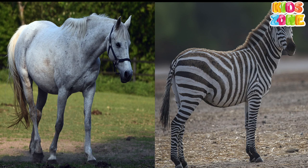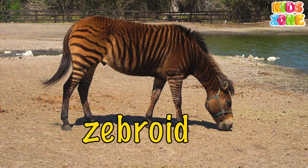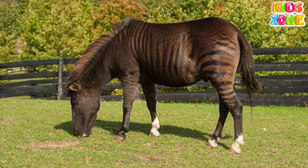Horse plus zebra: Zebroid. A zebroid is the offspring of a zebra and any equine species.